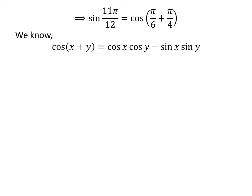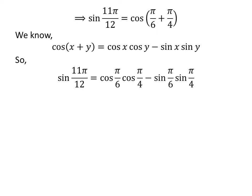We know cosine of x plus y is equal to cosine of x times cosine of y minus sine of x times sine of y. Application of the above identity gives us sine of 11 times pi upon 12 is equal to cosine of pi upon 6 times cosine of pi upon 4 minus sine of pi upon 6 times sine of pi upon 4.